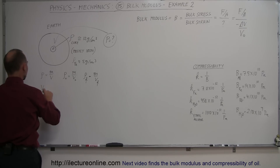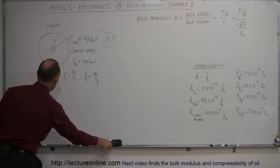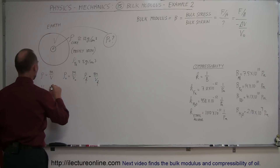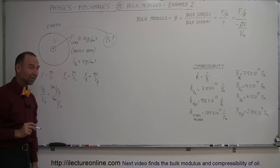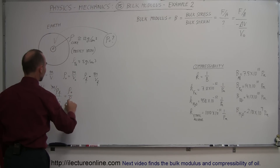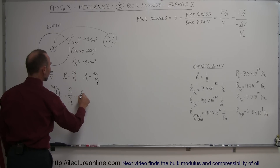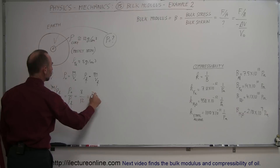The volume final over volume initial equals mass divided by density final, divided by mass divided by density initial. The mass cancels out, giving us the ratio of the original density divided by the final density. Since the original density was about 8 grams per cubic centimeter and the final density is 12, we can see that the ratio is equal to two-thirds.